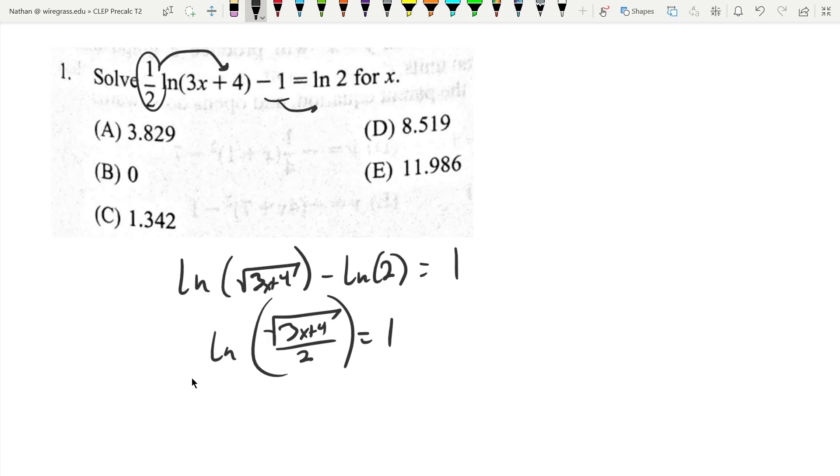So take e to the power of both sides, that'll cancel with the logarithm. So we get the square root of 3x plus 4 over 2 equals just e, the 1 is just e, and then I can multiply it by 2.